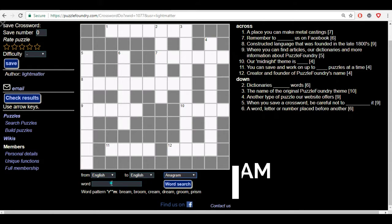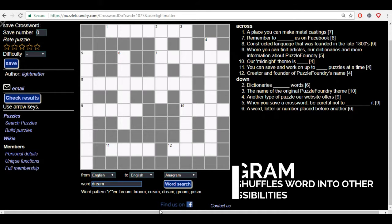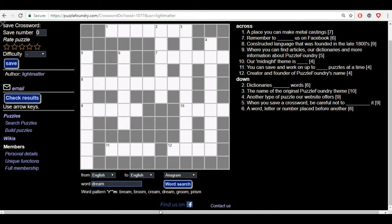Then next we have our anagram. Our anagram is pretty simple. If you've never done any anagrams before, it basically just reshuffles the words into other possibilities of words that do exist. So dream here will give us dream, armed and derma. So those are three little examples of how an anagram could be used.